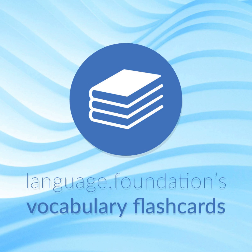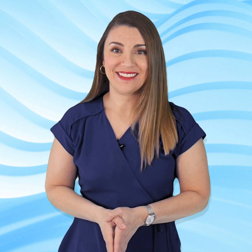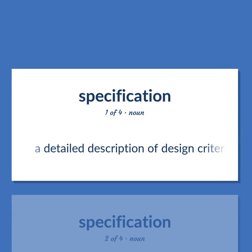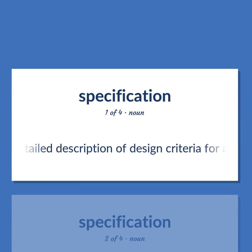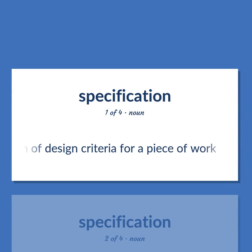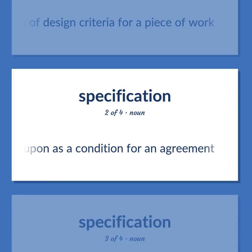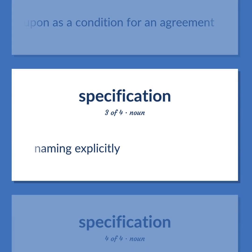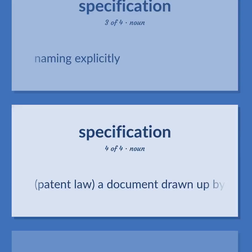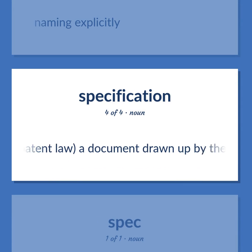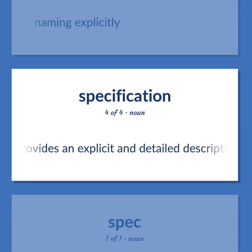Language Foundations Vocabulary Flashcards: Helping You Achieve Understanding. Specification — a detailed description of design criteria for a piece of work. Patent Law: a document drawn up by the applicant for a patent of invention that provides an explicit and detailed description of the nature and use of an invention.